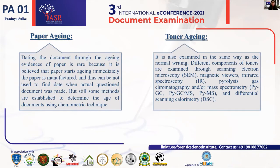Paper aging: dating of documents through paper aging is very less practiced because paper starts aging immediately after it is manufactured. However, chemometric approaches are being developed to determine dates of documents using paper aging. Regarding toner aging: toner also consists of different constituents, and when placed onto paper, several changes occur that can be analyzed through magnetic viewers and pyrolysis coupled with gas chromatography. These observations can then be used to determine what changes occur at which age, and thus assist in determining the age of the document.